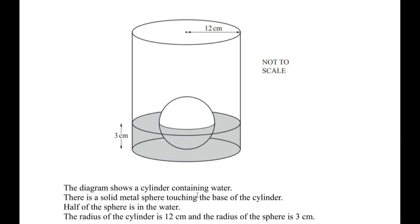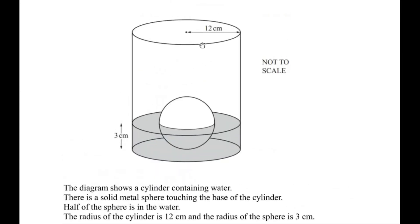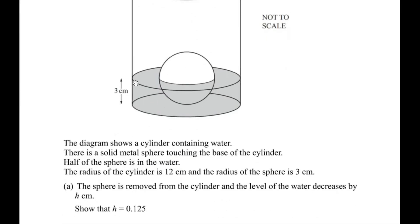The diagram shows a cylinder containing water. There is a solid metal sphere touching the base of the cylinder, and half of the sphere is inside the water. The radius of the cylinder is given as 12 cm and the radius of the sphere is 3 cm. The sphere is removed from the cylinder and the level of water decreases by h cm. We need to show that this decrease in the level of water is 0.125.